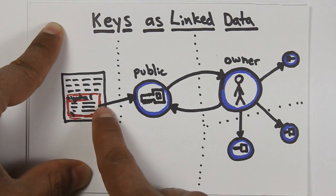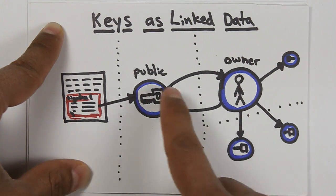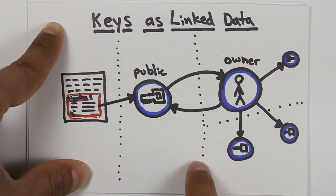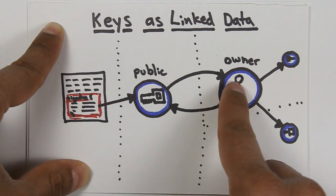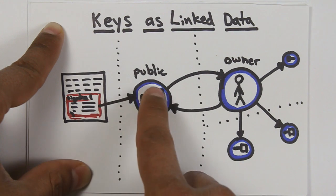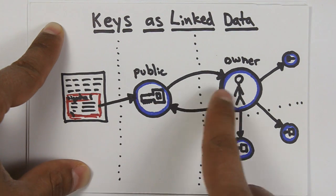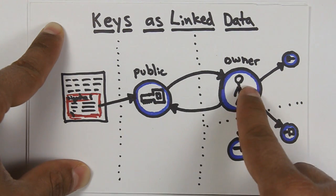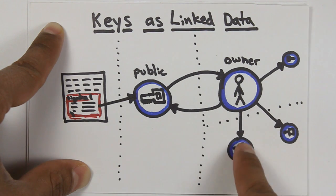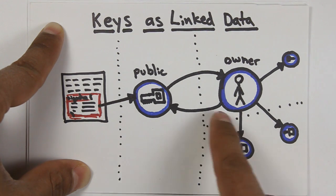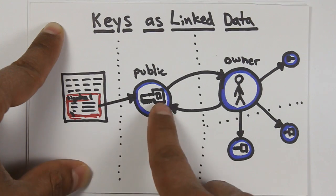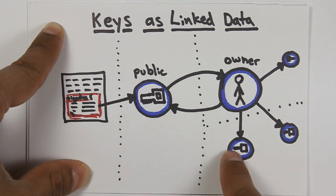The idea here is that these are just regular links on the web. Each one of these dotted lines is the boundary between one website and another. So your public key could live on one website. Your identity information could live on another website. And yet more public keys could live on another website. The use of links, the linked data part of all of this, is fundamental.